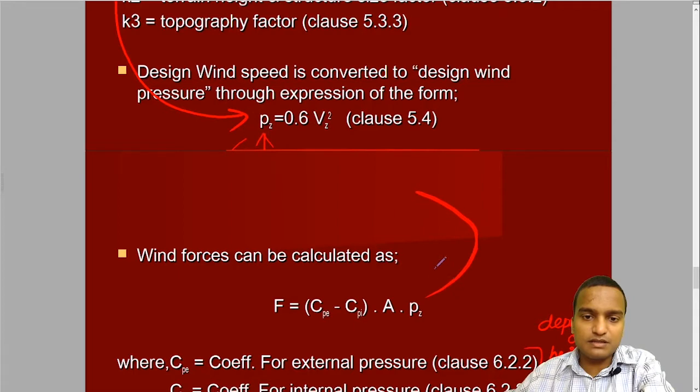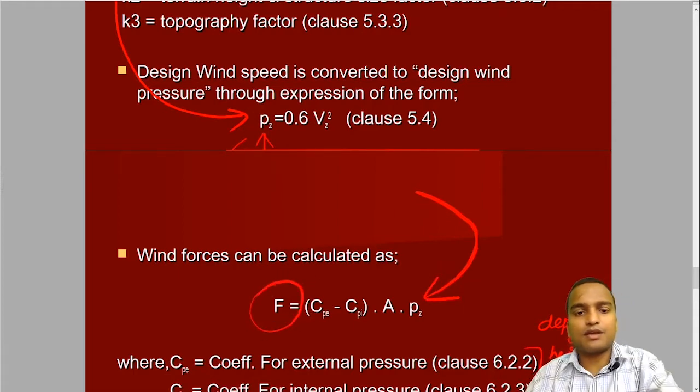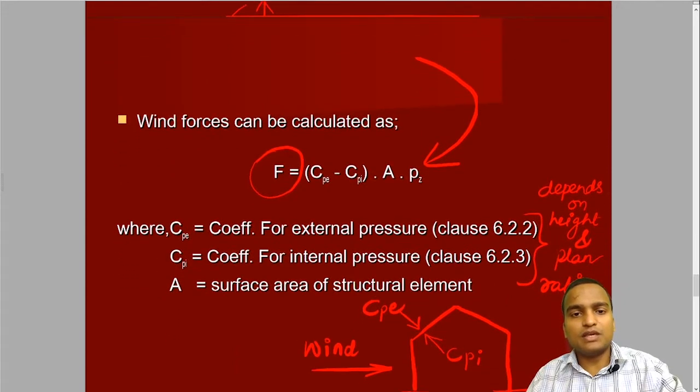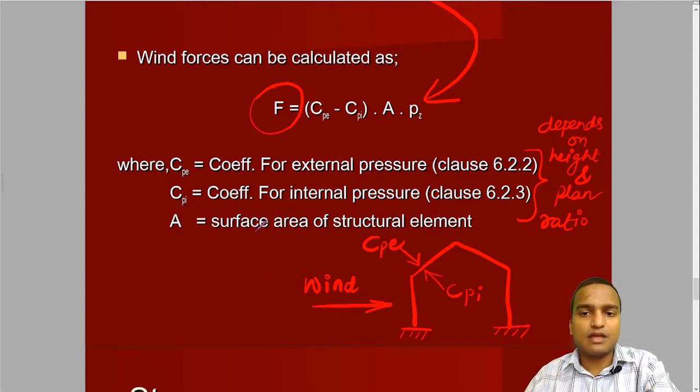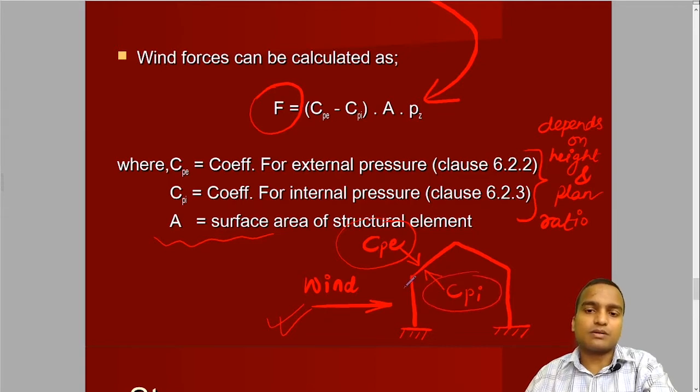We have to put this Pz in this formula to calculate this wind load F. F is the wind force which is equal to CpE minus Cpi into exposed area into wind pressure. What is the CpE and Cpi? These two coefficients are for external pressure and internal pressure. They depend basically on the height and plan ratio of building. It is not very difficult. Most of the time you can easily calculate it. There is a table given, and in most of the cases it is provided in the question. Then comes the exposed area of the structural element. You can see this is our structure, then the windward side is this. This is the coefficient of external pressure, and this is the coefficient for internal pressure. We add or subtract depending on the signs of coefficients, and then we use it in calculation of wind load.